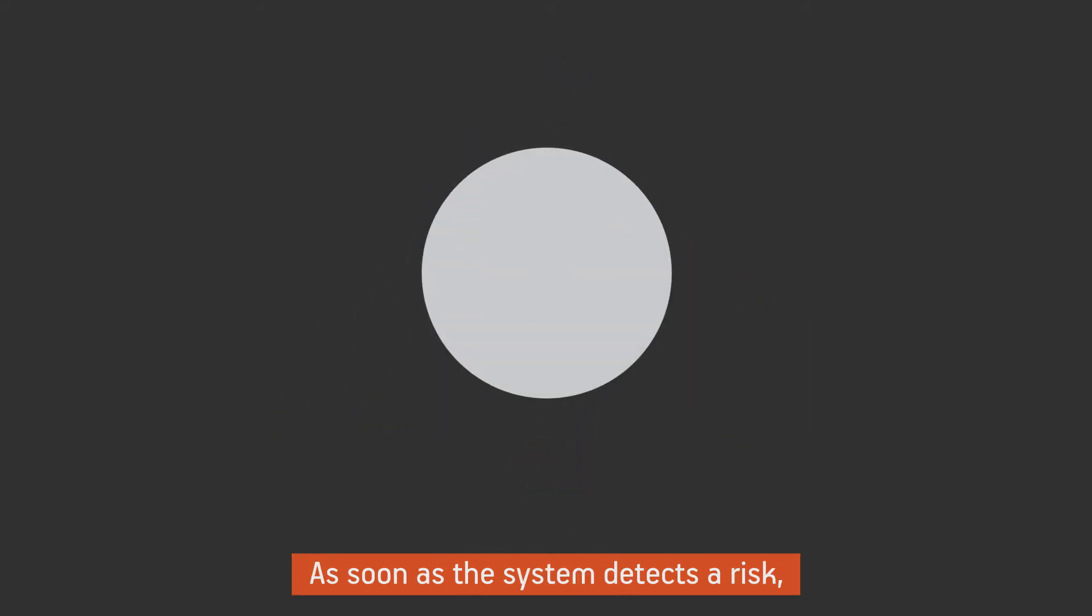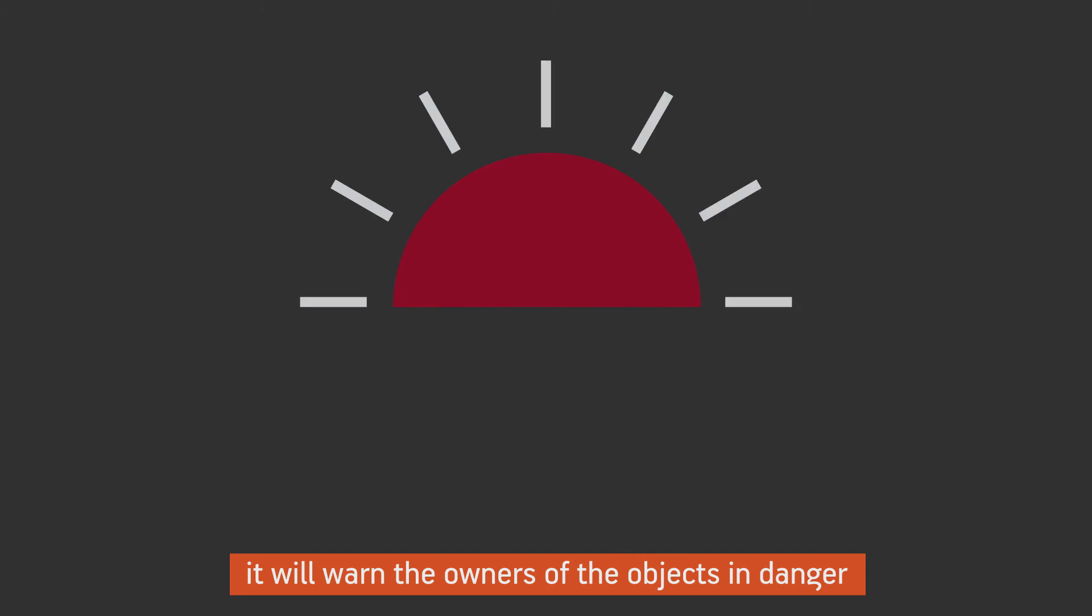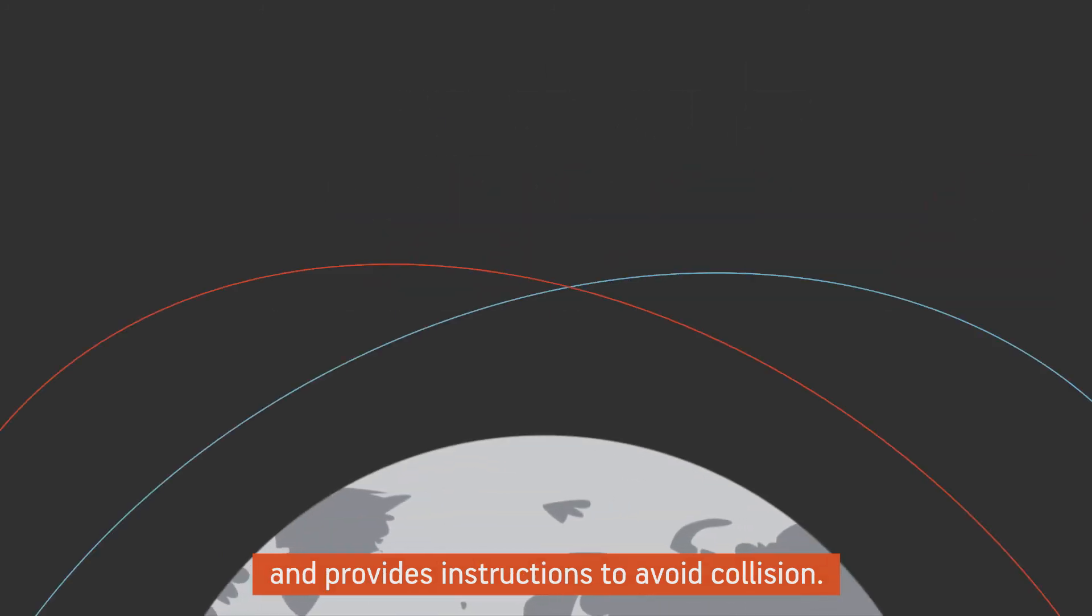As soon as the system detects a risk, it will warn the owners of the objects in danger, and provide instructions to avoid collision.